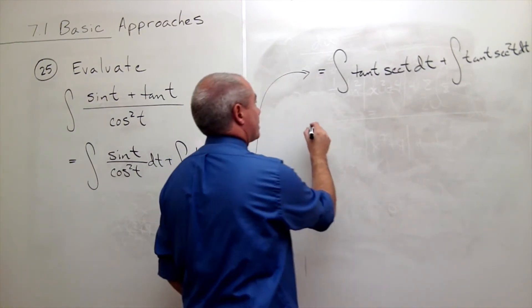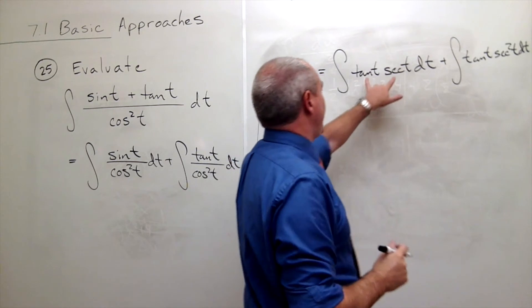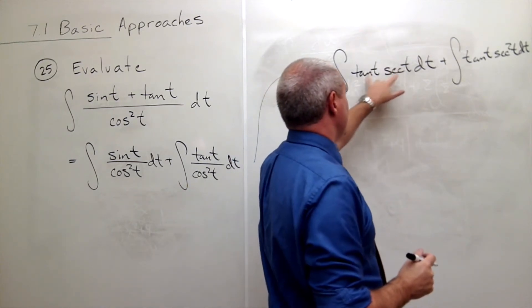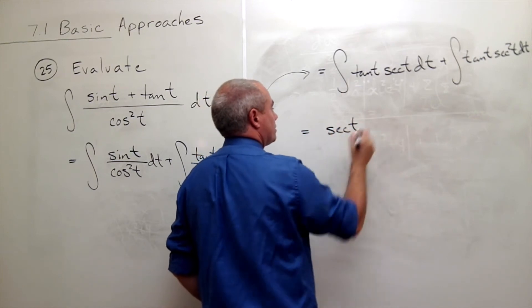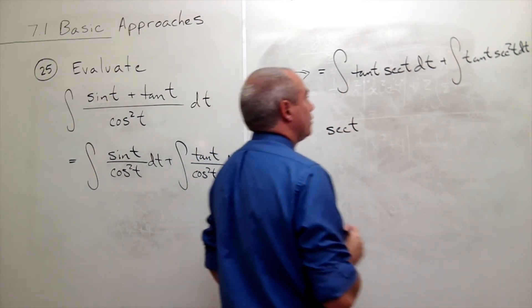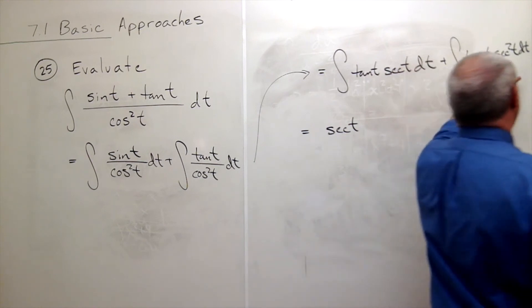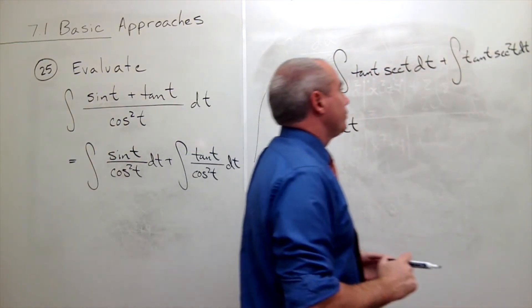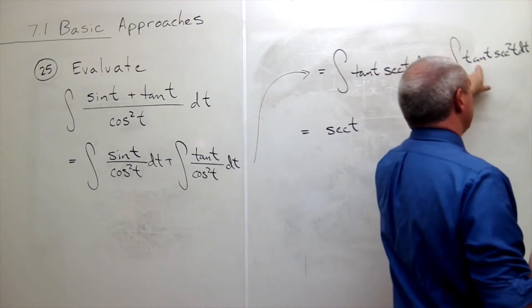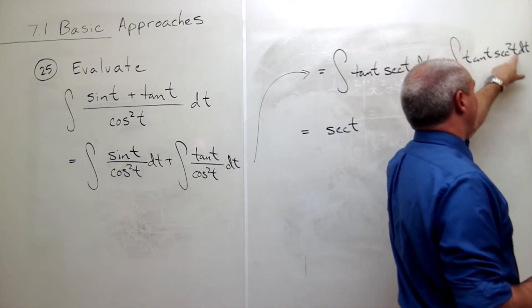Now let's look at this again. We know the antiderivative of tangent t secant t is just secant t. Over here we might need to use a u substitution. The derivative of tangent is secant squared t dt.